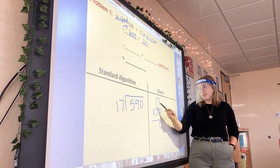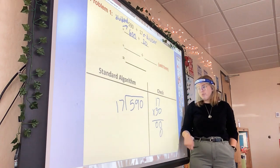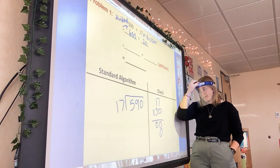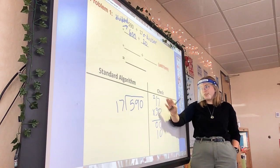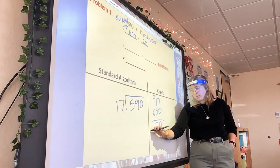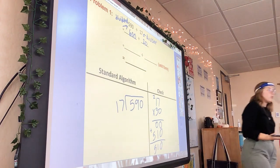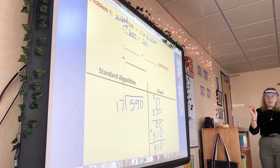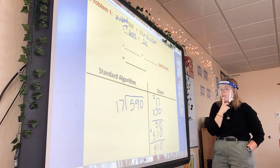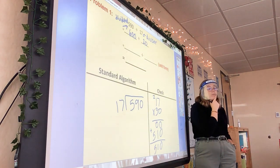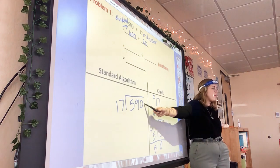Zero times 7 is zero, zero times 1 is zero — I need a place value holder because I've got two digits I'm multiplying by. 3 times 7 is 21, 3 times 1 is 3, plus 2 gives me 5 — add them together and I get 510. Can I squeeze in at least one more 17 before going over 590? Think of the difference between 510 and 590 to help you.